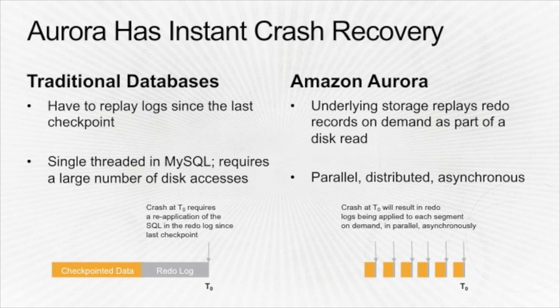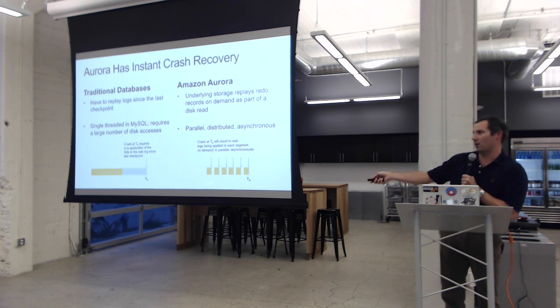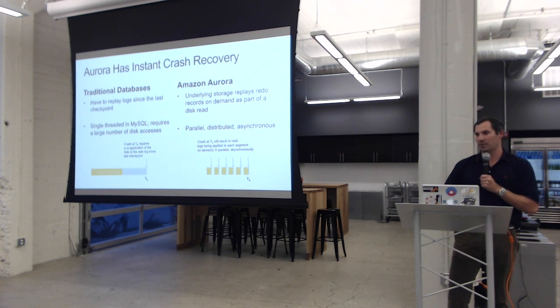In a typical database, you have checkpointed data and redo logs, and upon failure you must replay all uncommitted transactions up to the checkpoint — a potentially slow single-threaded operation. In Aurora, because the database file is the log and it's split into chunks across different data partitions, we can do essentially instantaneous parallel replays across those blocks. Recovery from failure is therefore very, very fast.